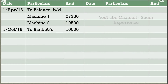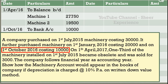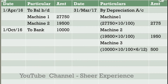In the second financial year we purchased one machine on 1st October 2016 for $10,000. We write 'To Bank Account' in the particulars column. At the financial year end, 31st March 2017, we charge depreciation on assets, writing 'By Depreciation Account' in the particulars column.